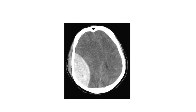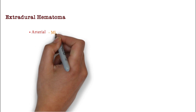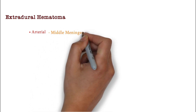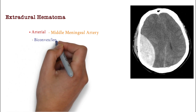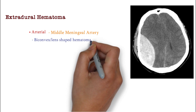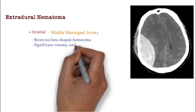Getting back to our story — we performed NCCT for Sara, and here is the image. Look over here: we can see a biconvex, or lens-shaped, hematoma. This is because of significant trauma or an underlying fracture. Let's talk about extradural hemorrhage. It is most commonly caused by arterial bleeding, commonly the middle meningeal artery. Here again is the biconvex, lens-shaped hematoma due to significant trauma and underlying fracture.